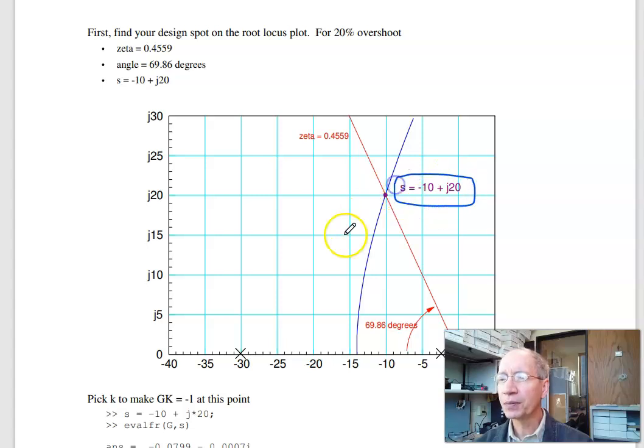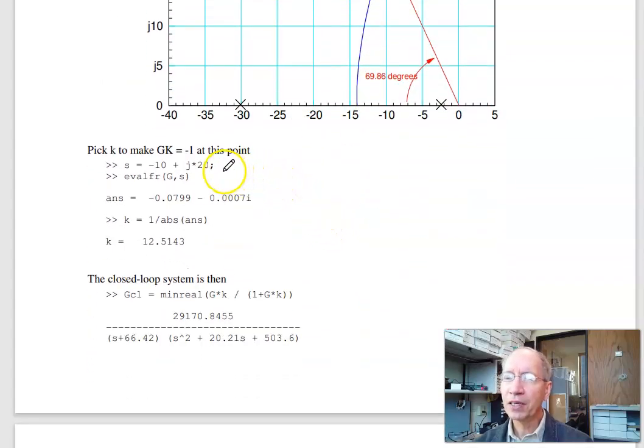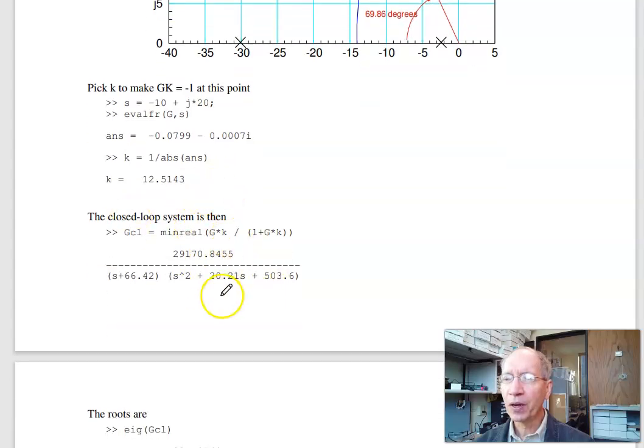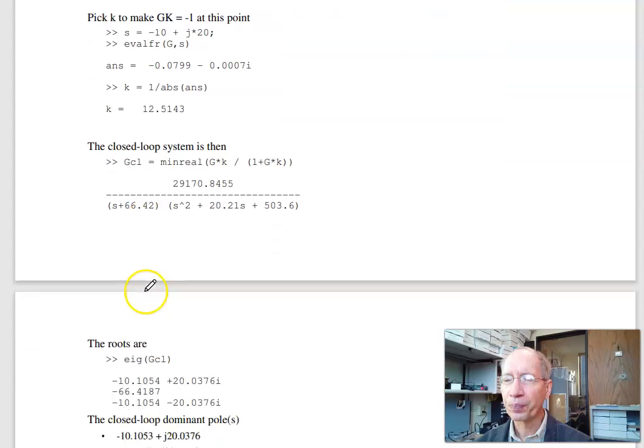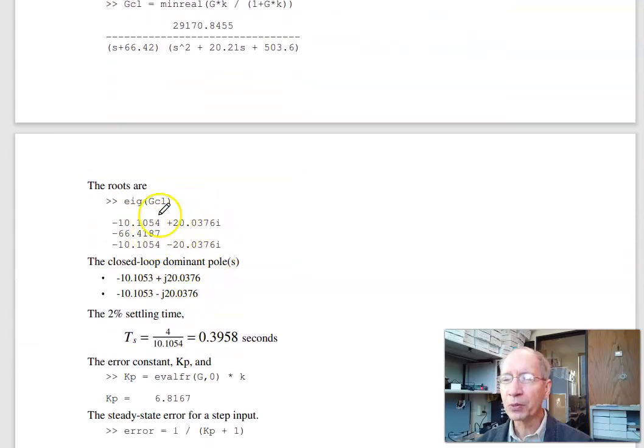Find the spot on the root locus that intersects your damping line. That gives you s. Once I know s, pick k to make the gain 1 at that point. So here's G(s) at your design point. Negative real. Almost. Pick k to make the gain 1. k is 12.1. Try it, and there's your complex pole. There's the past pole.